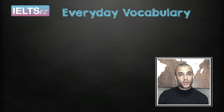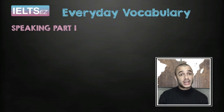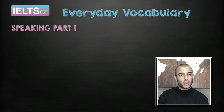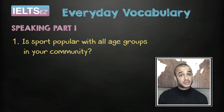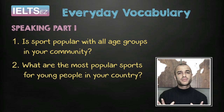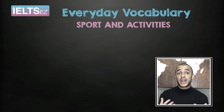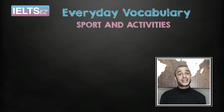Finally, let's have a look at a couple of questions that you may have in Speaking Part 1 in the IELTS exam. I will read a question and then I would like you to give a sample answer using some of the words that we studied today. First question: Is sports popular with all age groups in your community? Second question: What are the most popular sports for young people in your country? Alright, good work. You've improved your vocabulary and pronunciation on the topic of sports and activities, and now we have reached the end of this lesson of IELTS Booster. Thank you and stay tuned for the next lesson.